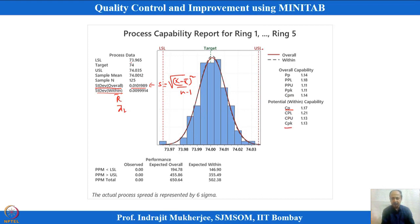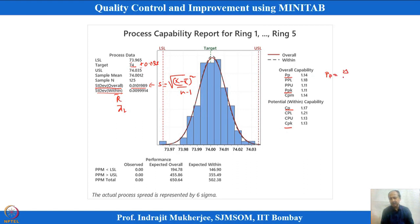This standard deviation overall is used to calculate another index similar to Cp and Cpk — namely the Pp and Ppk process performance indices. For the ring dimension with a nominal of 74 ± 0.035, we can calculate Pp and Ppk. The formula is the same as Cp and Cpk, except the sigma estimation changes: instead of R-bar/D2, we use S, the overall or long-term process standard deviation.